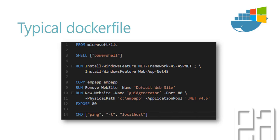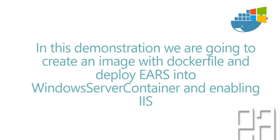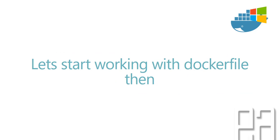That's how the Docker file is going to look like basically. We're going to build a very simple Docker file just like this, but instead of emp_app we'll be using the errors app — the Azure Automation Reporting System. In this demonstration we'll create an image with the Docker file and deploy the Azure Automation Reporting System into a Windows Server container, enabling Internet Information Server. We're going to enable IIS with .NET features and deploy the application by copying files from the host machine to the container.